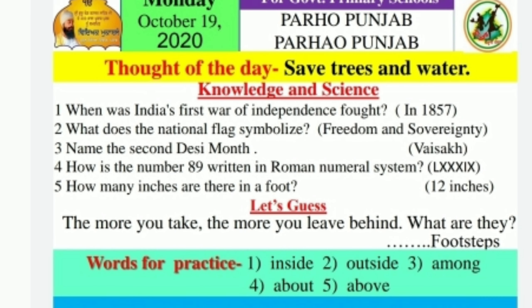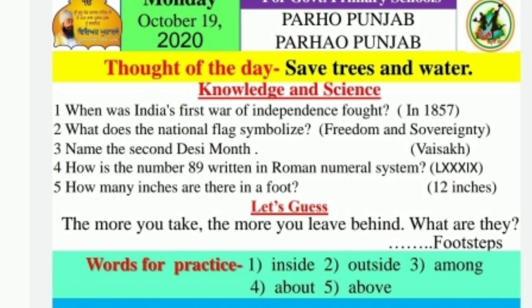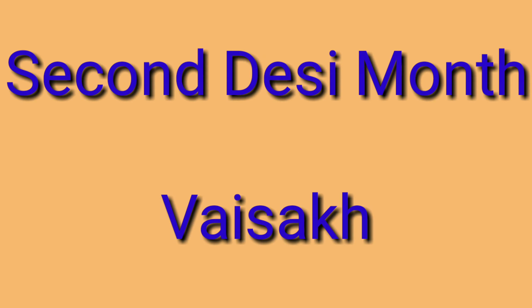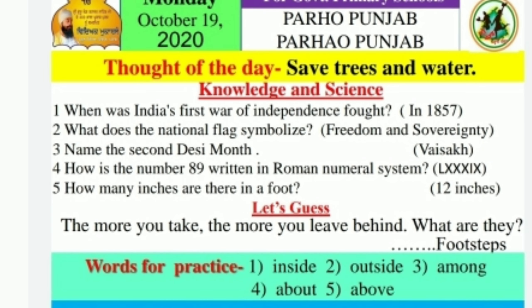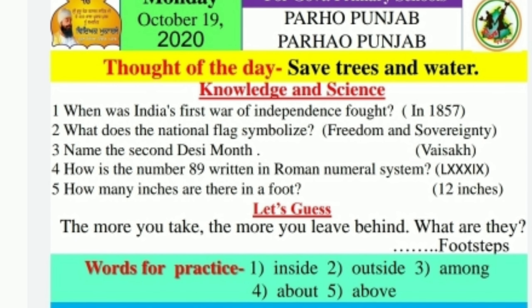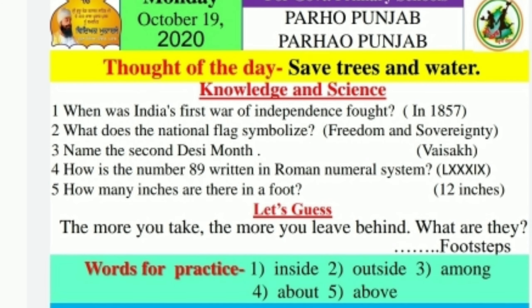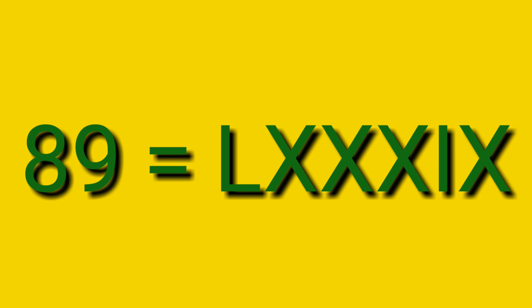Next question: name the second Desi month. Dear student, the answer is Baisakh. Next question: how is the number 89 written in the Roman numeral system? Dear student, we write it in Roman numerals as capital LXXXIX — that is 89.